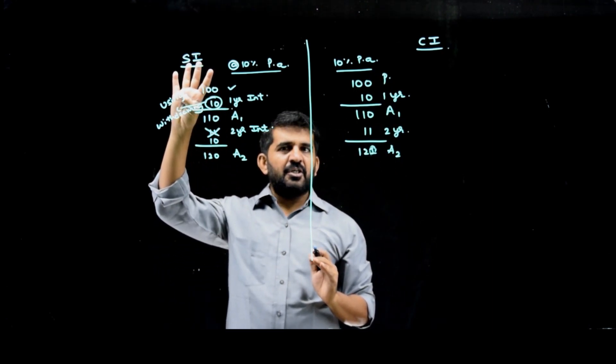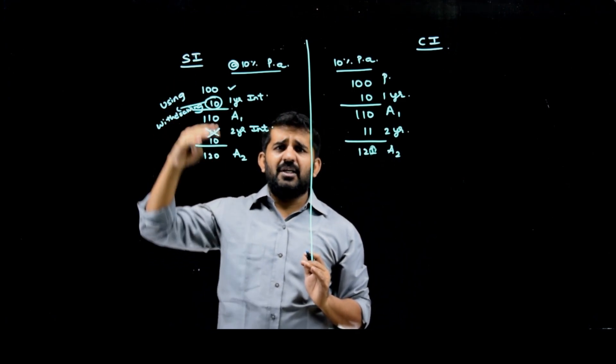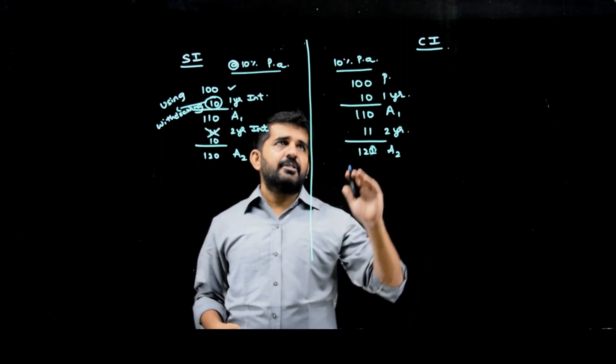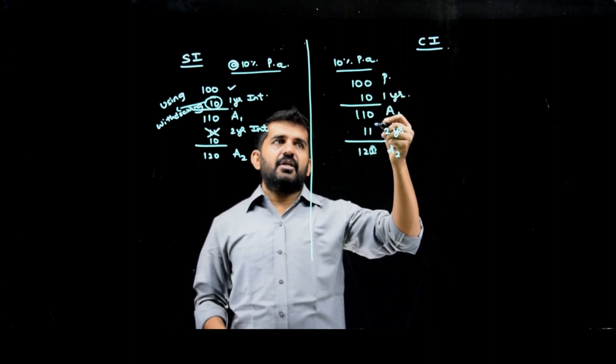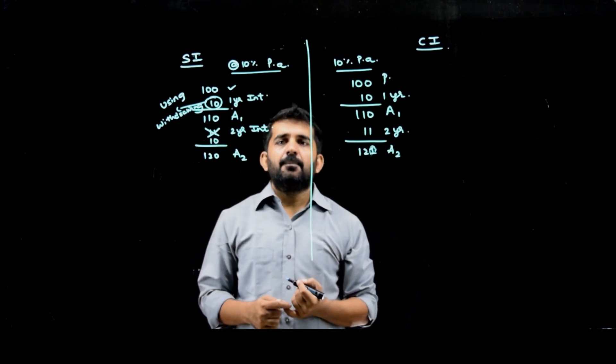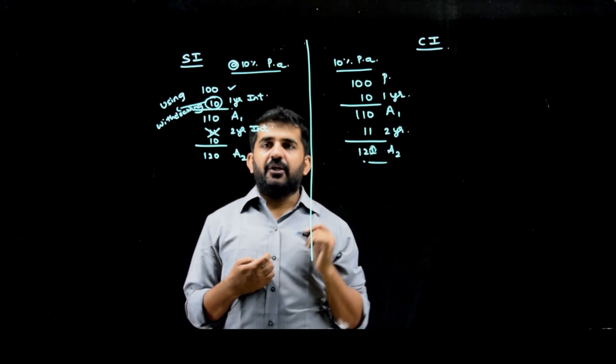So in simple interest, you are using your interest. You do not get interest on interest. We calculate as per the formulas and concept of simple interest. In compound interest, you are not using your interest, you're reinvesting your interest, and so we calculate compound interest. All the formulas and concepts of compound interest will come into picture. Thank you.